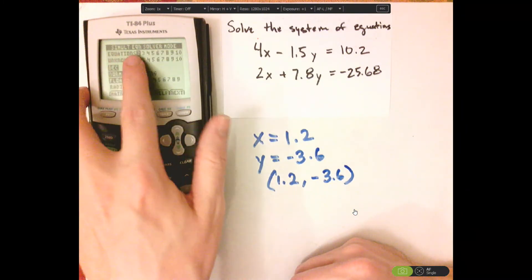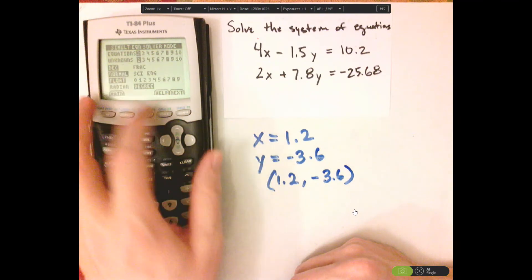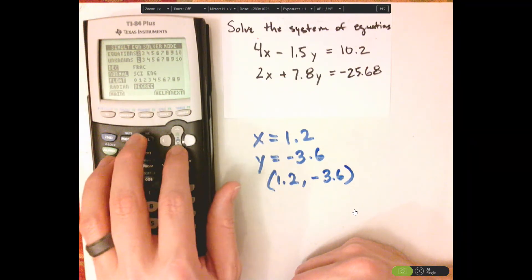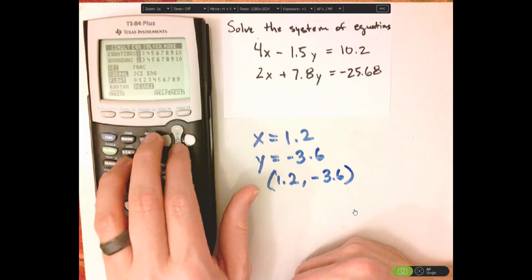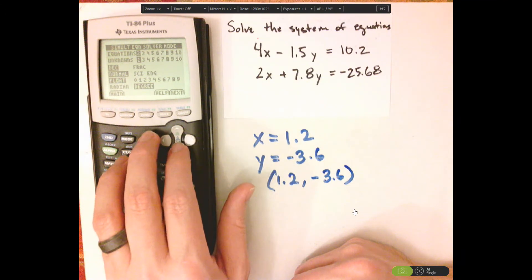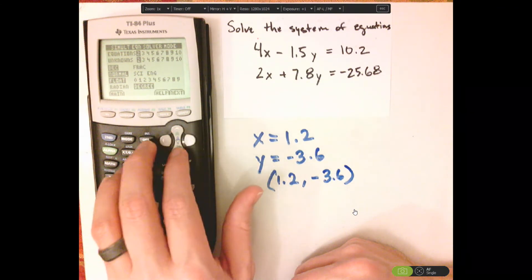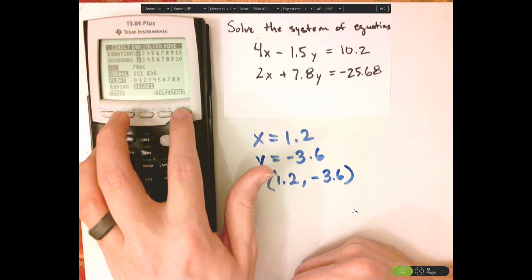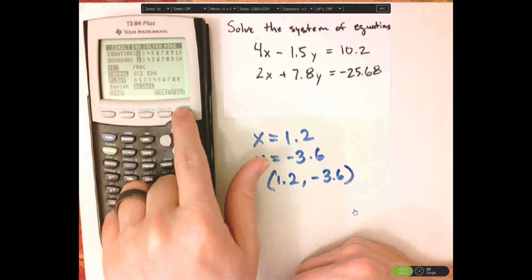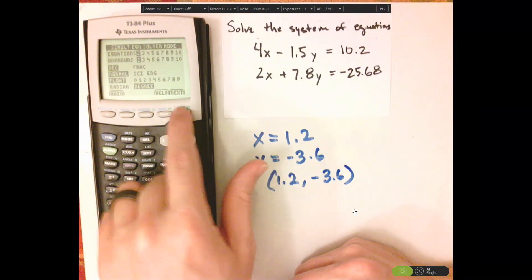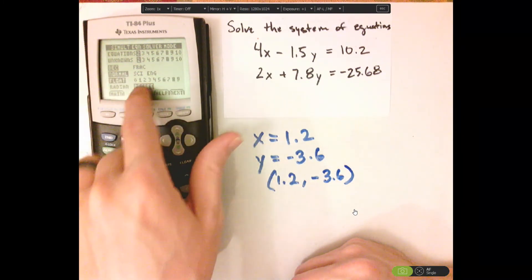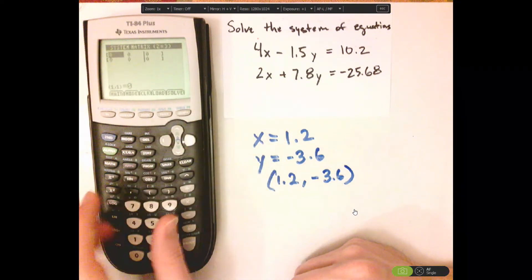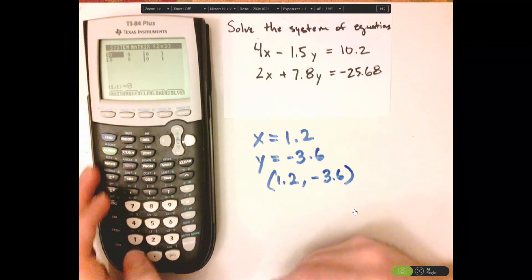Select the number of equations. We have two equations with two unknowns. Decimal or fraction — let's go with decimal. Hit next. You can ignore the rest of that. Hit next. Hit next, and we're going to type this in.